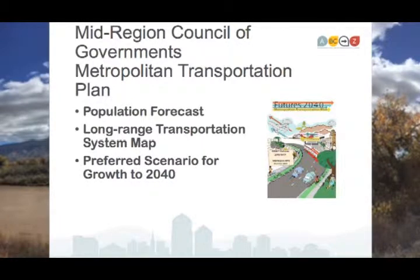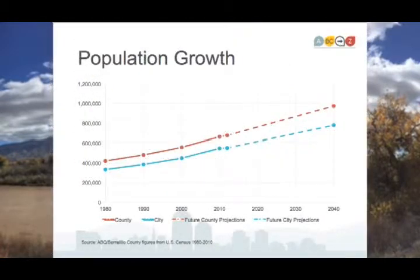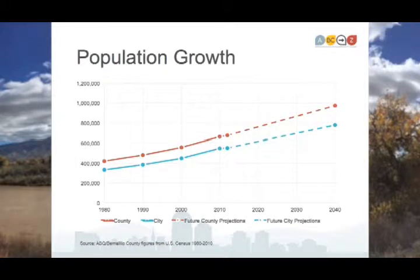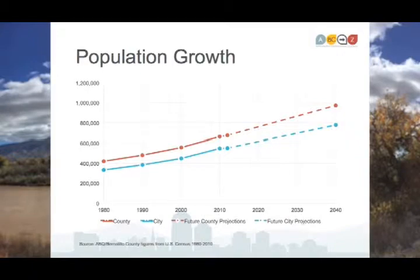The Metropolitan Transportation Plan for 2040 provides a forecast for growth in both the city and the county. Both are expected to grow to 2040. The rate of growth is less than once expected, but both are still growing. People are still having babies and moving to our region because of our livability and beautiful setting. It is important to plan for the growth we expect in both the city and the county in the future.